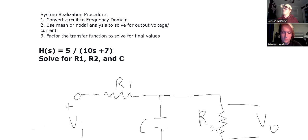Welcome, BMIN 321 students. This is Jonah Peterson and Matthew Dawson. We're going to be going over an example about system realization.